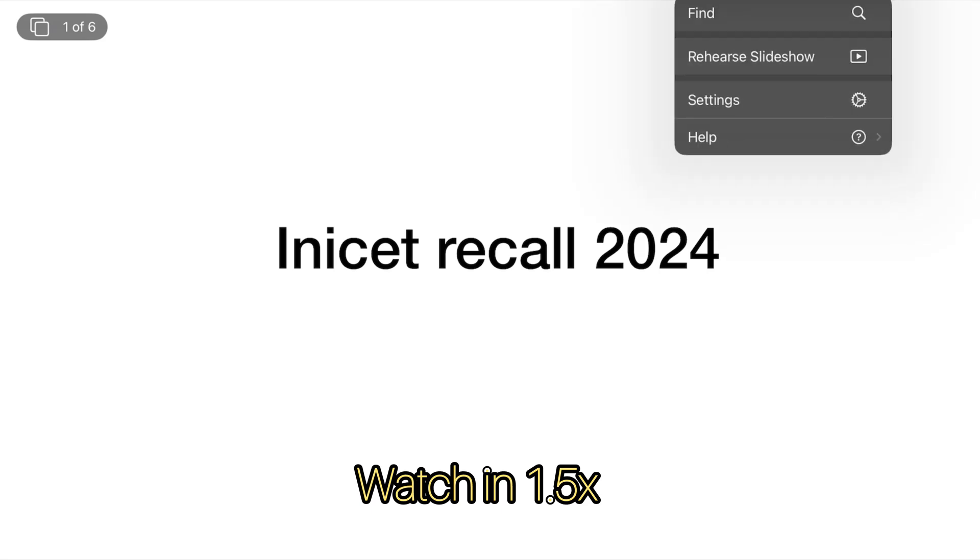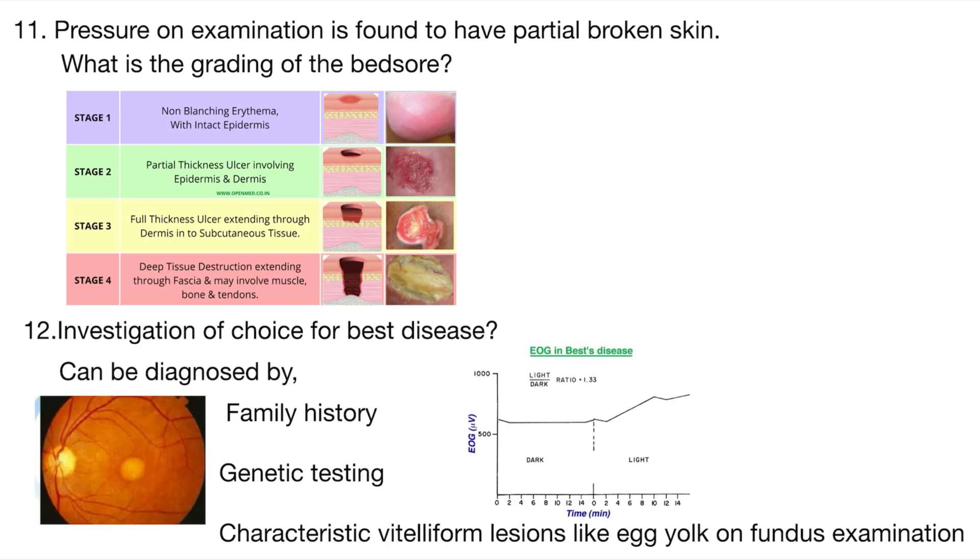Hi guys, welcome back to my channel. This is INESET recall 2024 part 2, let's get started. The first question was: what is the pressure on examination when the patient has partial broken skin? The question was about bedsores. The patient presented with partial broken skin, which is shown in this picture here. It is nothing but Stage 2. I'm assuming that the question asked was about this. I think the answer should be Stage 2.